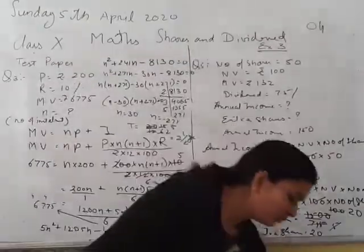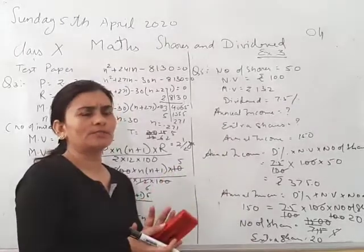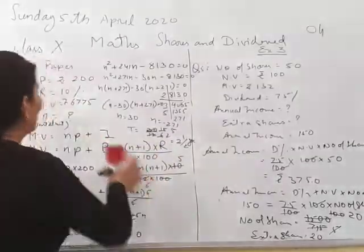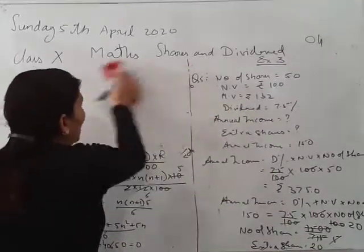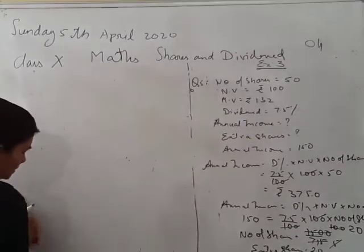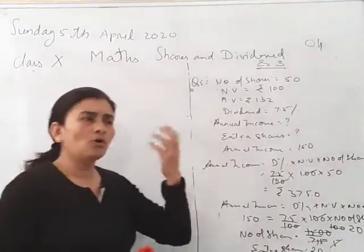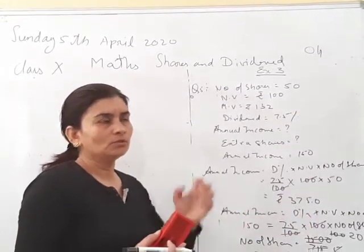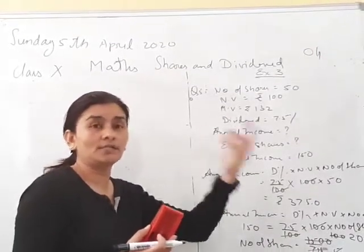Now you have a query in question number 24 and question number 34. There is a little difference — the word 'sale proceed' is used. First let me explain what sale proceed means. Sale proceed itself serves as investment. If a person first buys shares from one company, then sells all those shares and invests whatever amount he gets into another company, then that investment in the second company is called the sale proceed.